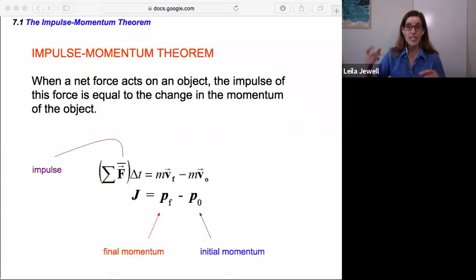So the impulse momentum theorem says that if we have a net force acting on an object over some time interval, the impulse of this force, the force times the time interval is equal to the change in the momentum of the object. And m times velocity final minus m times velocity initial. Instead of writing that out every time, we can write that as momentum final minus momentum initial. And I didn't have an easy way to make vector symbols, but I bolded them to represent the vectors.